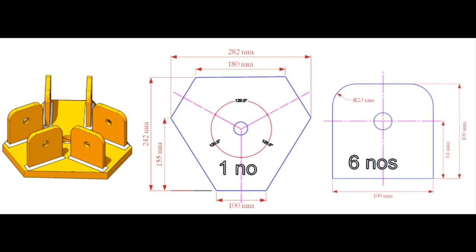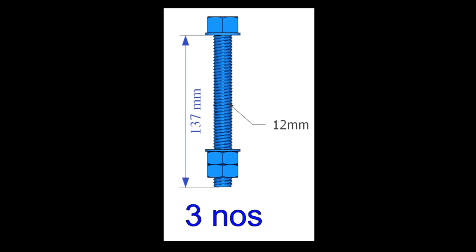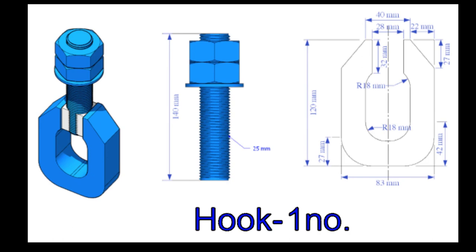12 millimeters diameter bolts, 3 numbers for assembling the legs with the bearing plate bracket. The thickness of the hook plate is 30 millimeters.